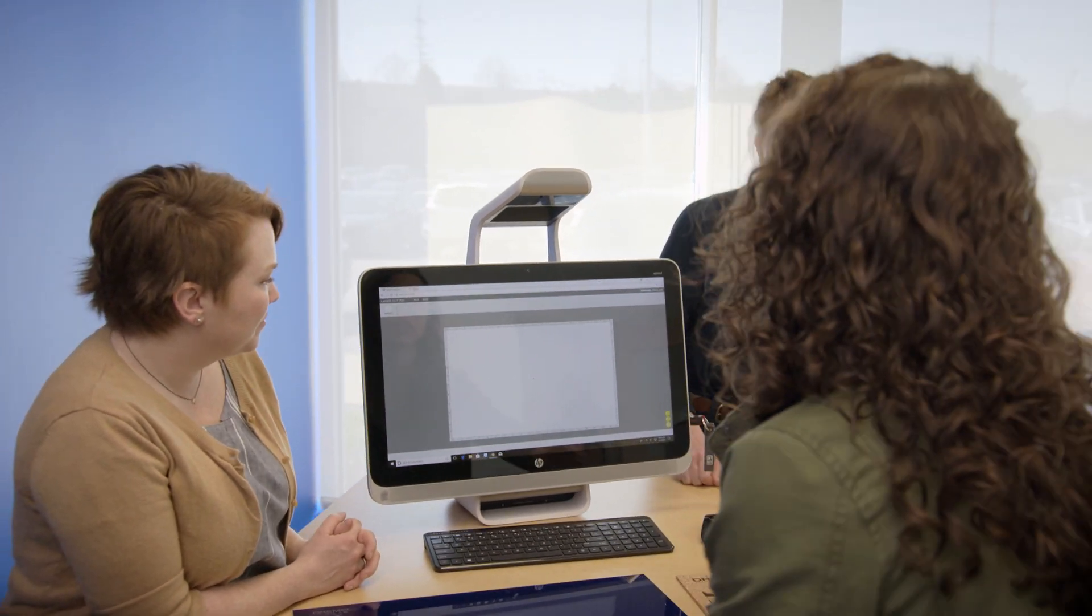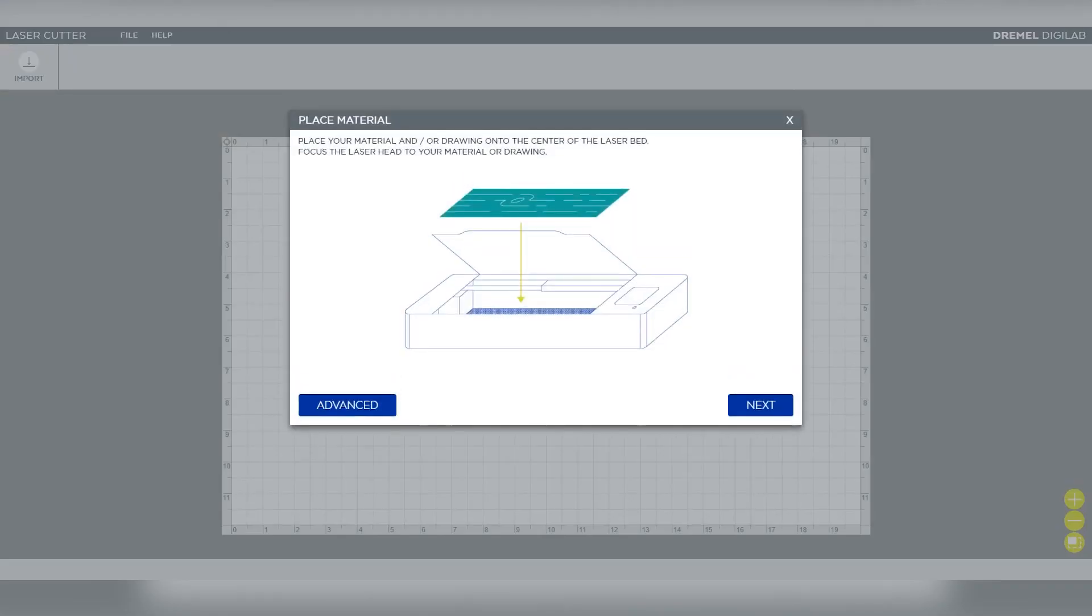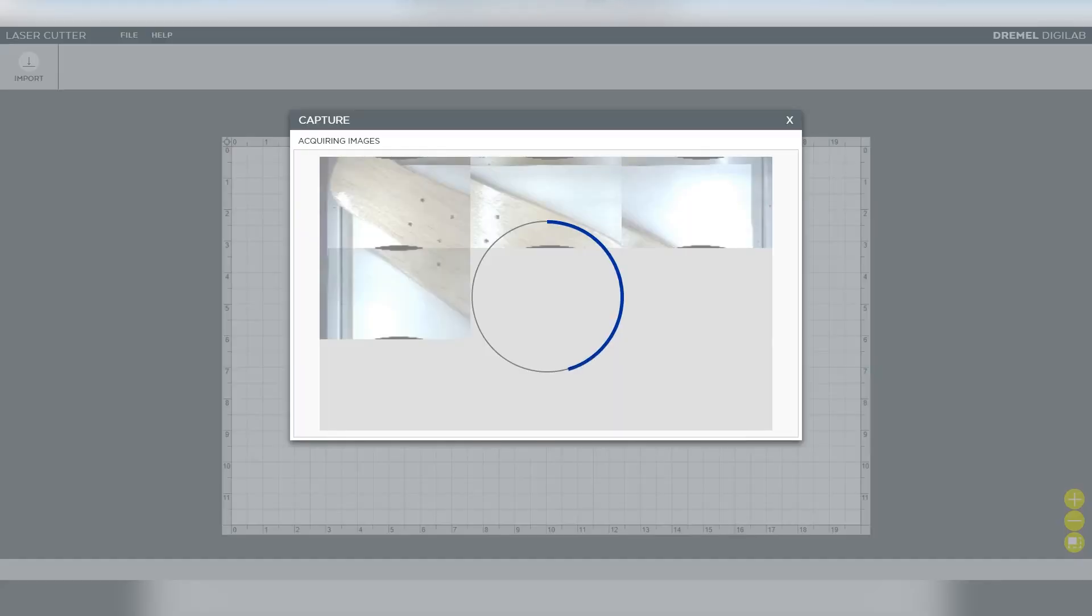We've just put the skateboard onto the laser. What we're going to do now is come over to import and use what we're calling camera capture. It's giving you a reminder that you need to place your material into the laser close to the center. It's going to capture that height, then move around the bed and take nine different photos and stitch those photos together to create one photo.